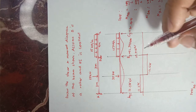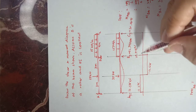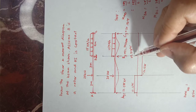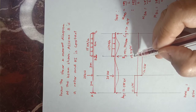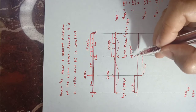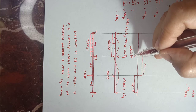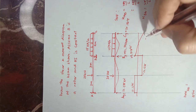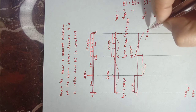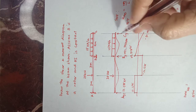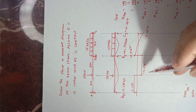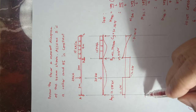With the uniformly distributed load on BC, the shear reduces linearly since the load is downward. Subtracting 15 times 4 gives a value of negative 30.28125 at C. Then the upward reaction C_y closes the shear diagram.